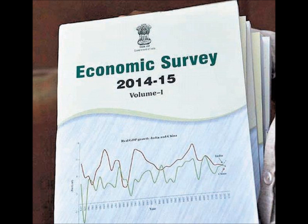The FRBM Act imposes a legal liability on the government to maintain fiscal consolidation. The FRBM Act, enacted in 2003, made it compulsory that the government at no rate can increase fiscal deficit beyond three percent of total GDP. This established the principle that the government must maintain fiscal deficit within three percent of GDP. Chapter 3 of the Economic Survey says the government has been able to maintain this FRBM criteria.